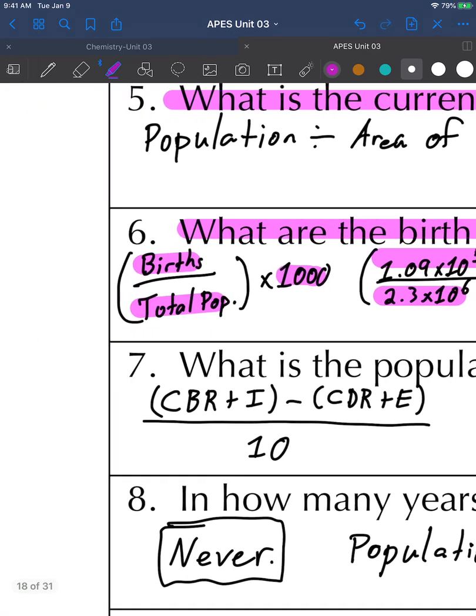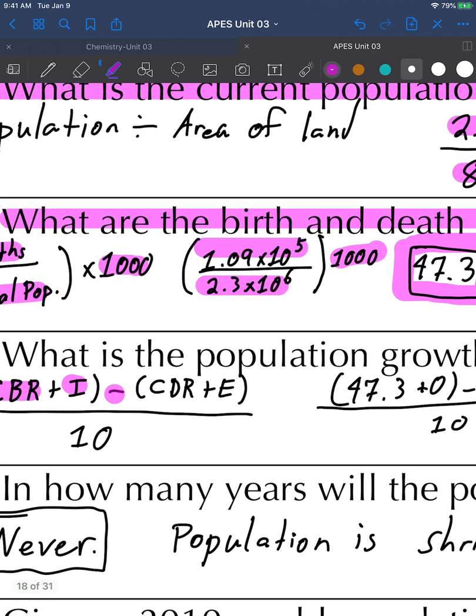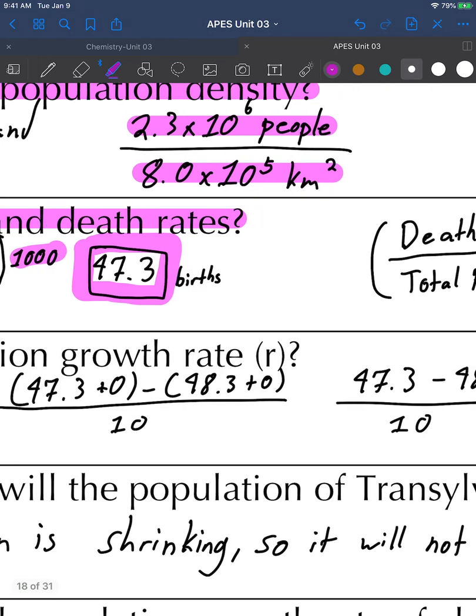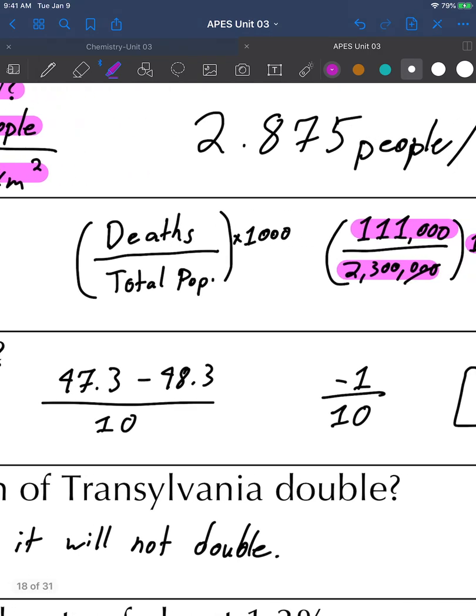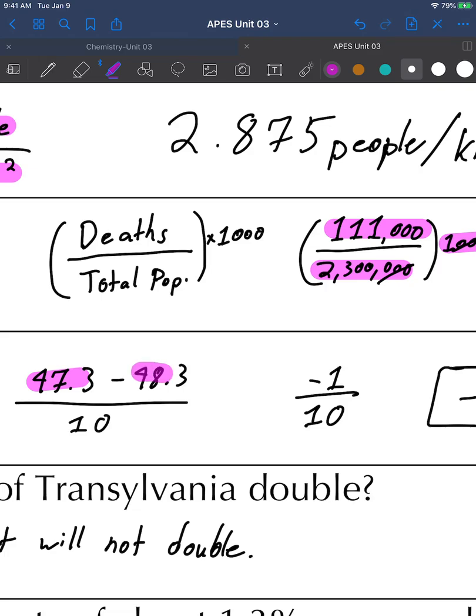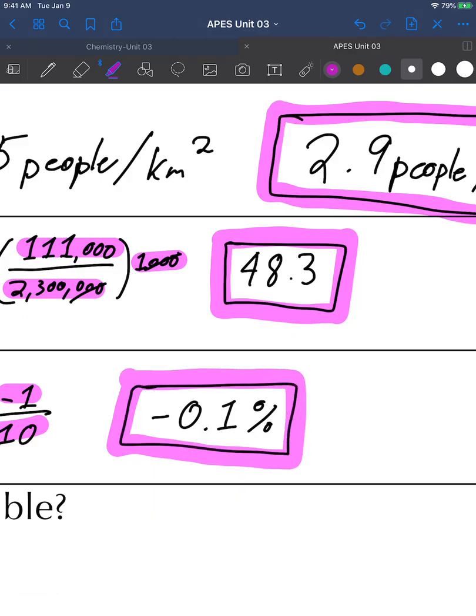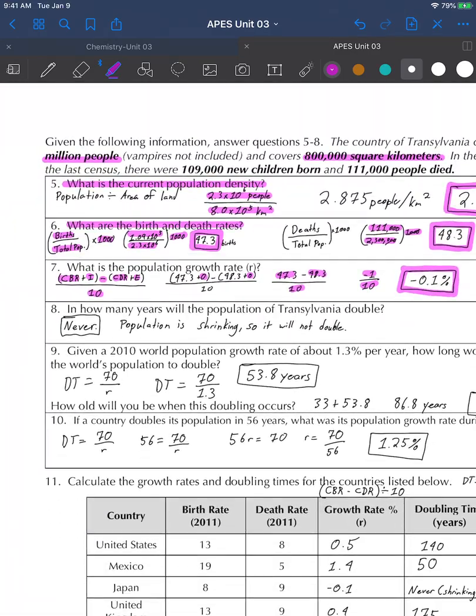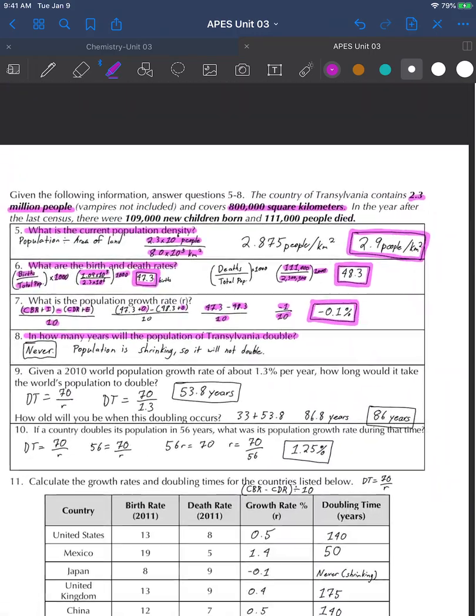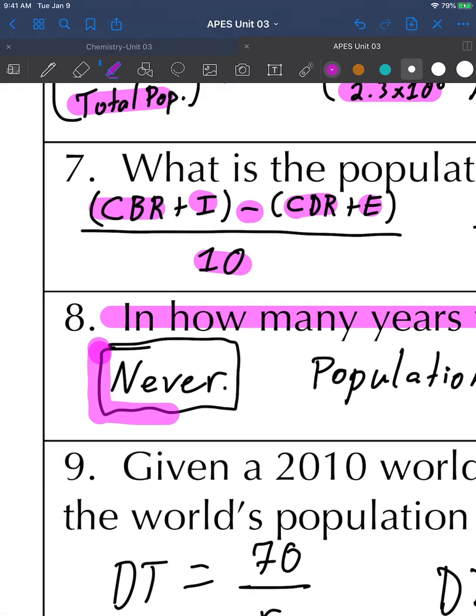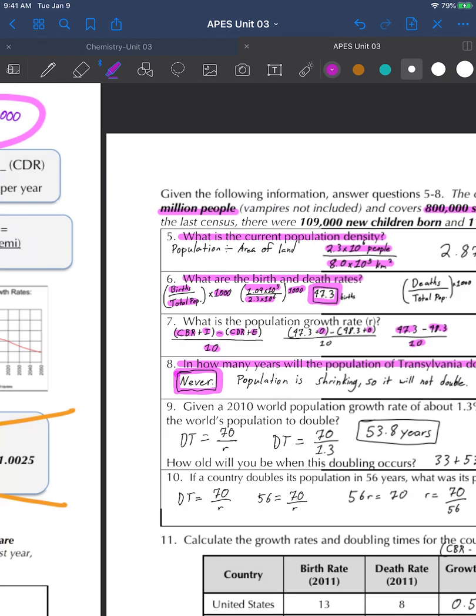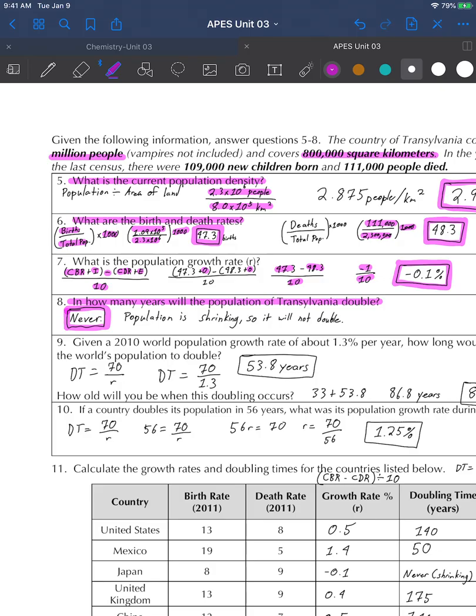Growth rate is crude birth rate plus immigration minus crude death rate plus emigration divided by 10. We don't have any immigration emigration in this problem, so those are both zero. We end up with 47.3 minus 48.3 divided by 10, which gives us negative 1 over 10, which gives us a growth rate of negative 0.1 percent. Here's a nice trick question: how many years will it take for the population to double? Well, you have negative growth, it's never going to double. Population is shrinking, it cannot double.